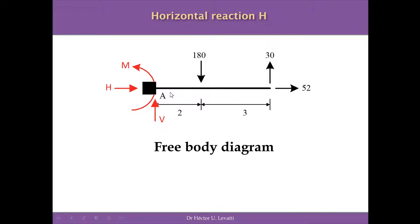This is the free body diagram of the cantilever beam. Instead of the inclined load, we now have the vertical and horizontal components applied at the same point of application. Because this is a fixed support, we expect to have a horizontal reaction, a vertical reaction, and a reactive moment at point A.